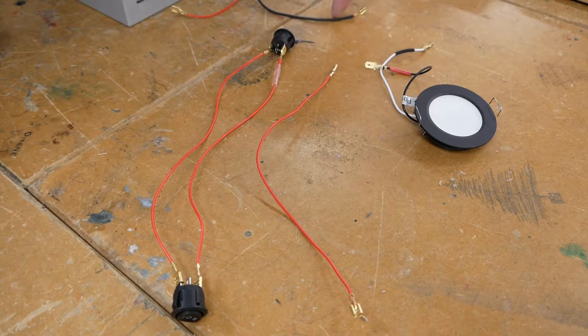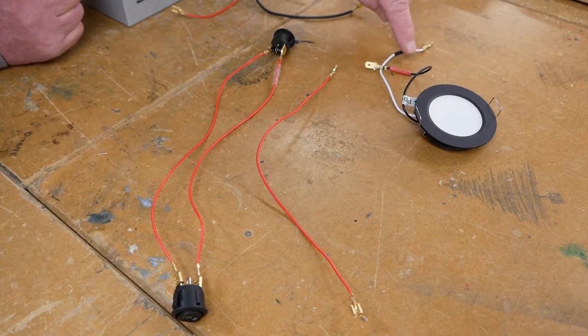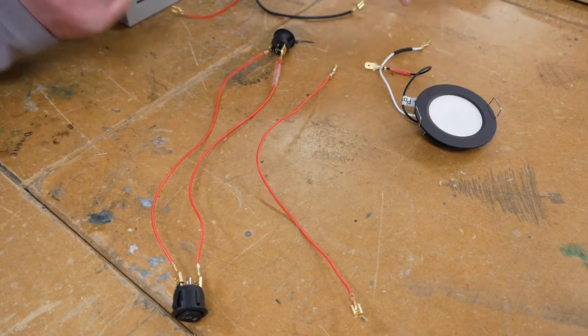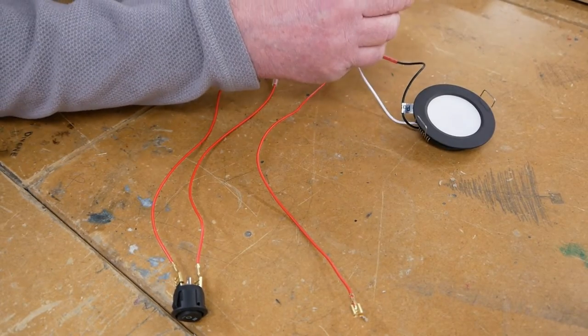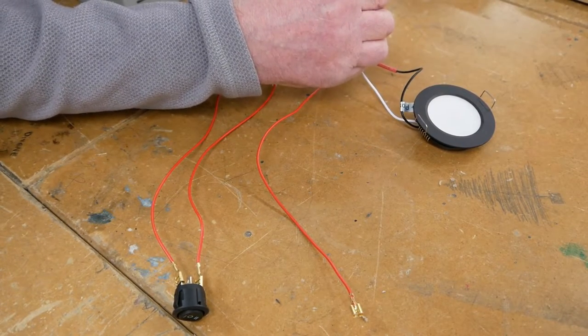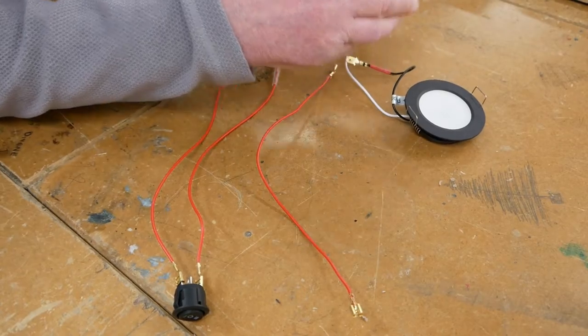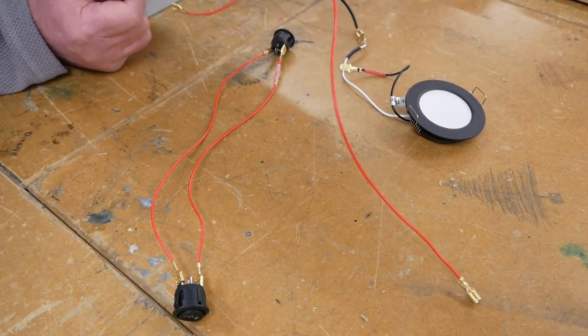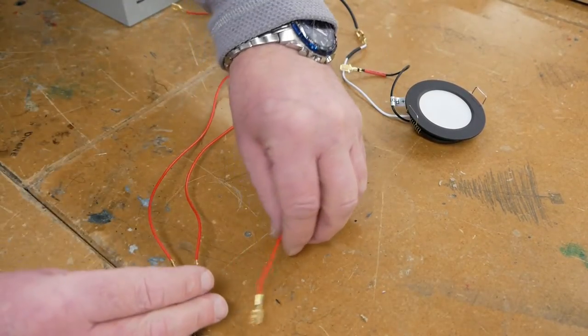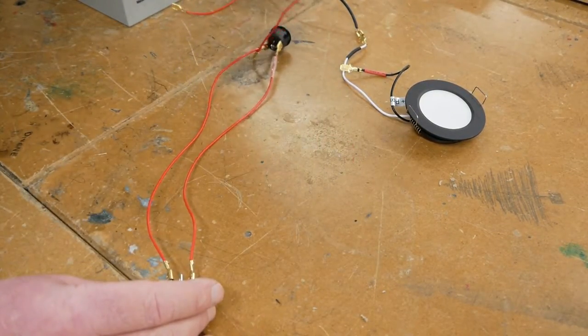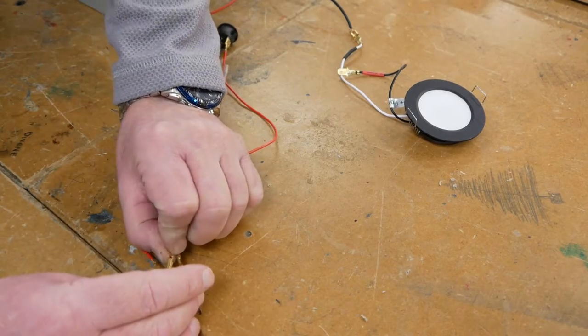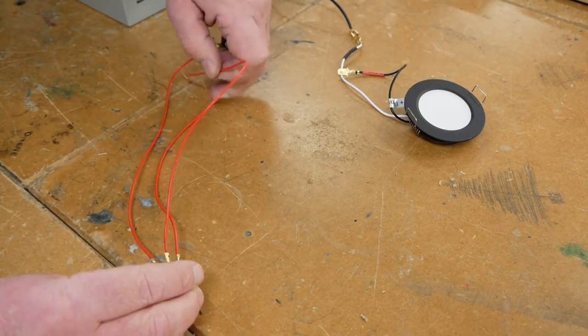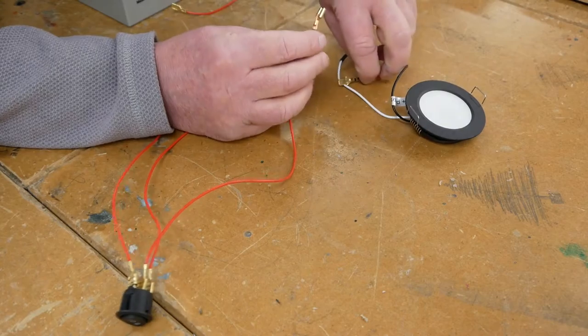Next, what I want to do is connect the earth or ground to the negative or ground of the puck light. So my little black heat shrink denotes that's the ground, so I'm going to connect those up. And then I have a live going to the middle terminal of this switch, going to the live of the puck light.